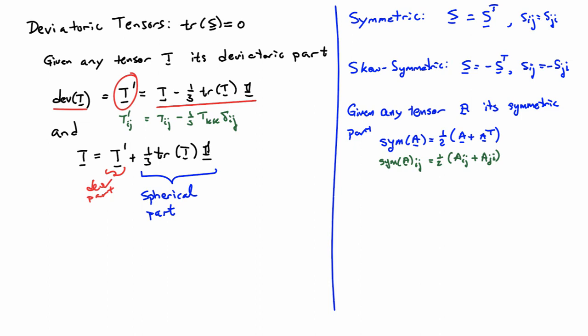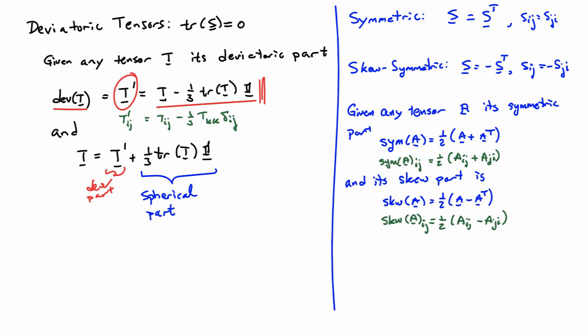Just as any tensor has a deviatoric part, you can compute the symmetric part of any tensor by adding it to its transpose and dividing by two: sym(A) equals one-half times (A plus A transpose). The skew part is one-half times (A minus A transpose). It is straightforward to verify the first expression is symmetric and the second is skew by taking their transposes, using the fact that the transpose of a transpose equals the original tensor.